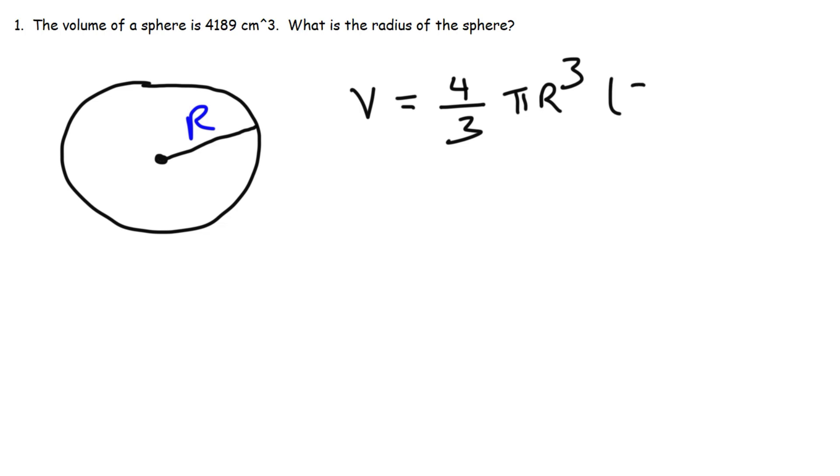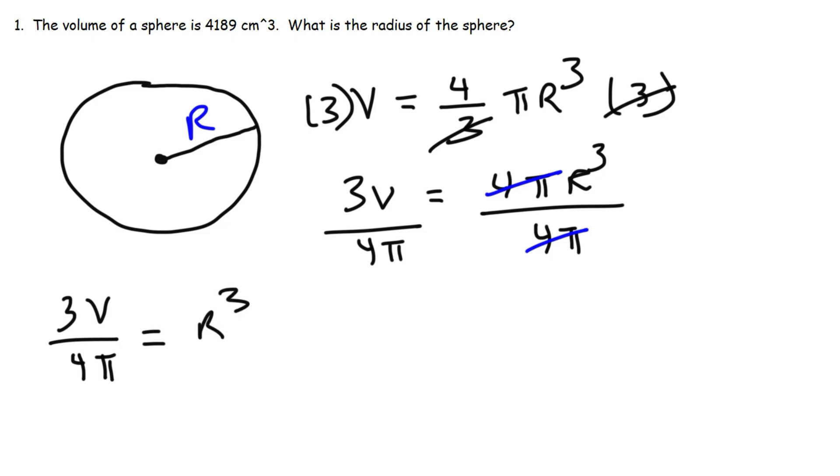First, I'm going to multiply both sides by 3. These will cancel. So I have 3v is equal to 4 pi r cubed. Next, I'm going to divide both sides by 4 pi.